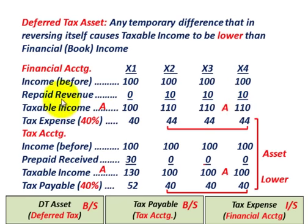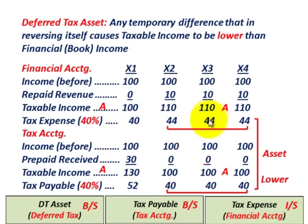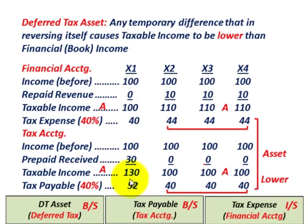Tax expense for financial accounting at 40%: $40,000 in year one and $44,000 for each of the next three years. For tax accounting, we recognize the prepaid revenue of $30,000 when cash was received — all in year one, with none in years X2 through X4.